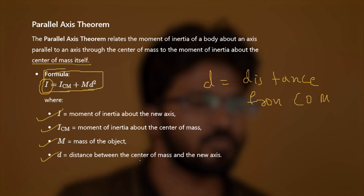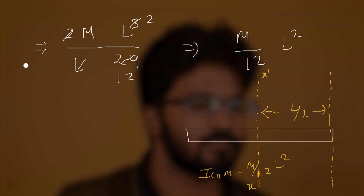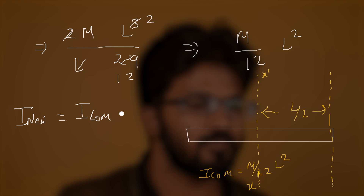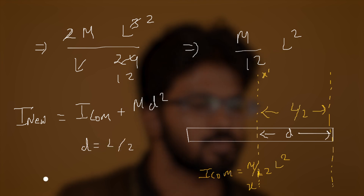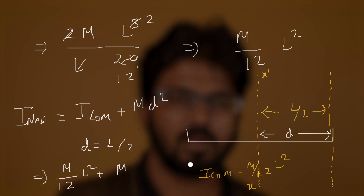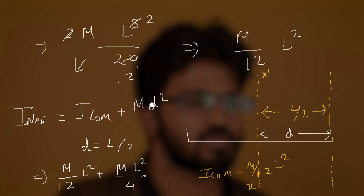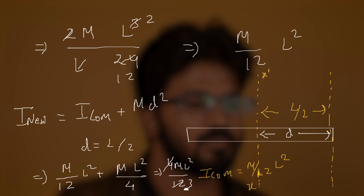Applying this, I_new = I_cm + md² = ml²/12 + m(l/2)². Since d = l/2, we have d² = l²/4. Adding: ml²/12 + ml²/4 = ml²/12 + 3ml²/12 = 4ml²/12, which equals ml²/3. So along this end axis the moment of inertia is ml²/3.